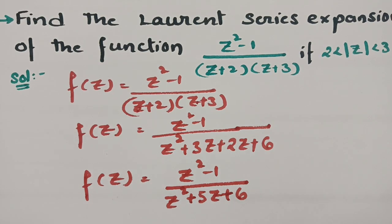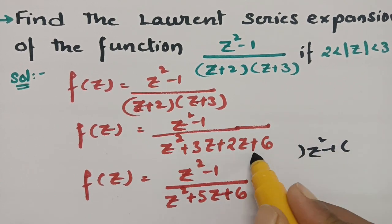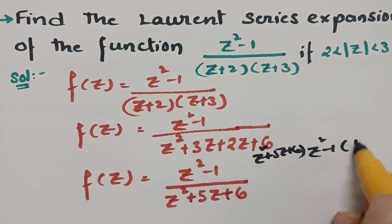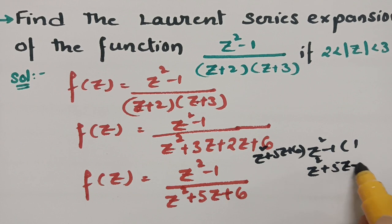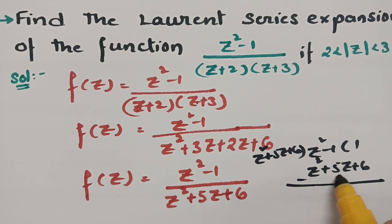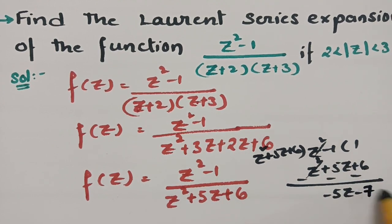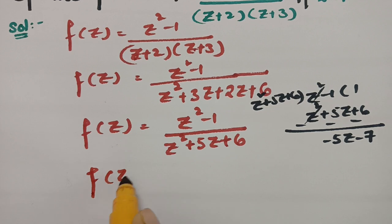For the division, we divide z² - 1 by z² + 5z + 6. It goes in one time, giving z² + 5z + 6. Subtracting, we get minus 5z minus 6, and then minus 1 gives minus 5z minus 7 as the remainder.